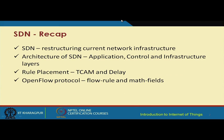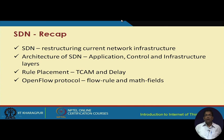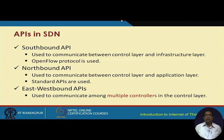As a recap, in the first part of SDN we understood the basic concept behind SDN, the architecture of SDN, the rule placement problem, and the trade-off between TCAM limitations — limited TCAM memory — and delay. We also understood the OpenFlow protocol, the flow rule, and the match fields in the OpenFlow protocol.